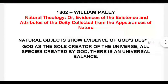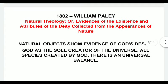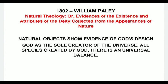In 1802, William Paley published a book called Natural Theology, or Evidences of the Existence and Attributes of the Deity Collected from the Appearances of Nature. This book showed natural objects as evidence of God's design, because God was the sole creator of the universe. He created everything — all plants and animals, all species — and there is a universal balance in everything because that is how God designed the universe to function. Everything is God's design: that is what Natural Theology in 1802 argued.